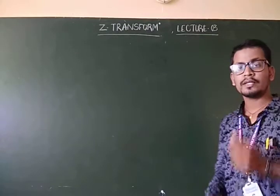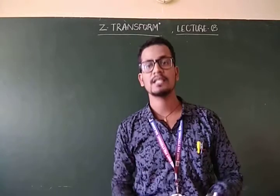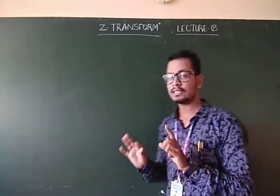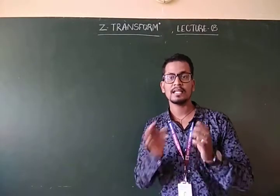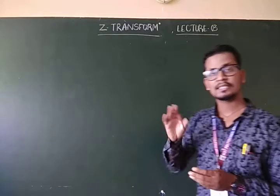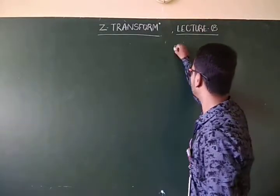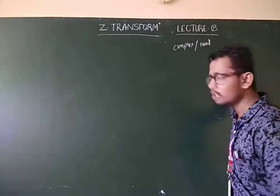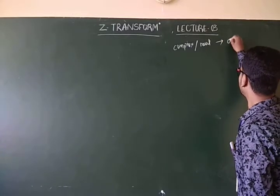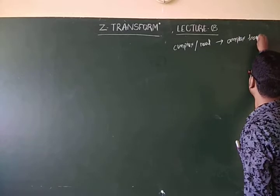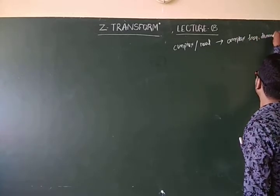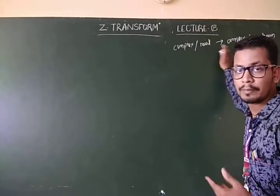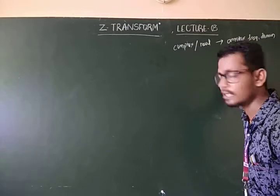So, before going to analysis the Z-Transform, first of all we have to know what is Z-Transform. Z-Transform means, in Digital Signal Processing, Z-Transform converts discrete form — which is in the form of complex or real numbers — to the complex frequency domain. That means it is used to convert complex or real numbers to the complex frequency domain. Is that clear?